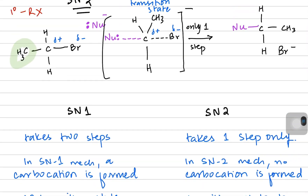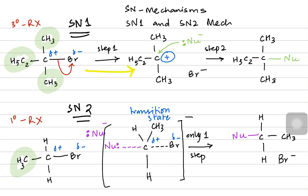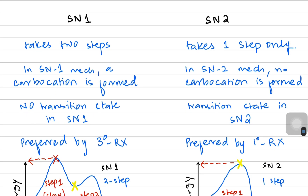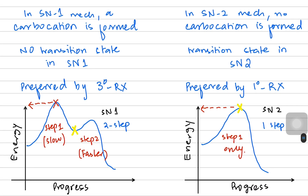In today's video we talked about SN mechanisms and noticed that they can be SN1 or SN2. SN1 goes for tertiary halogenoalkanes and SN2 goes for primary. SN1 is a two-step process and SN2 is a one-step process. We noted the key differences and looked at their energy profile diagrams. I hope this video is clear for you guys — stay tuned, thanks.